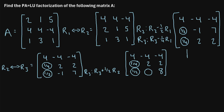Similar to before, we write the opposite of the row operation in that zero position — that would be negative one-half — to remind us of its value in the L matrix. Since there are now zeros below each pivot position, we have reduced the matrix to row echelon form. This final matrix is our U matrix, since all values below the main diagonal are zero.